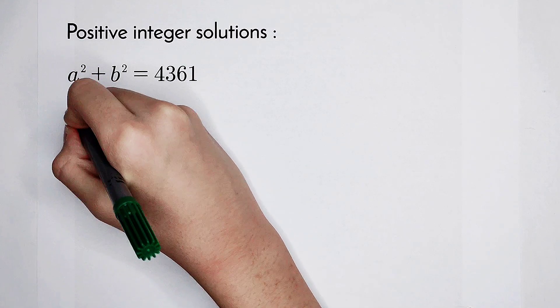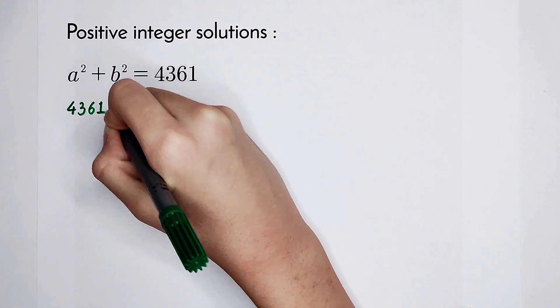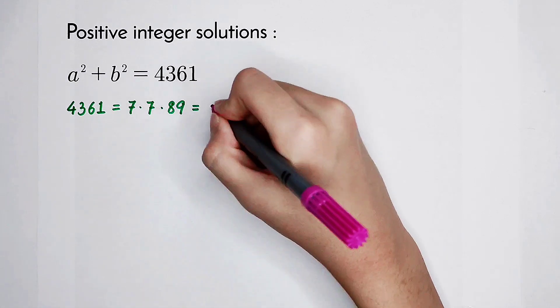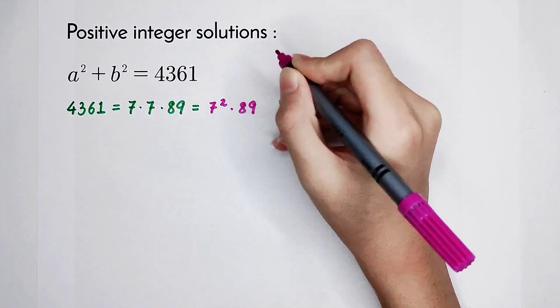This number, 4,361, it's very nice. It is 7 times 7 times 89, which is 7 squared times 89.